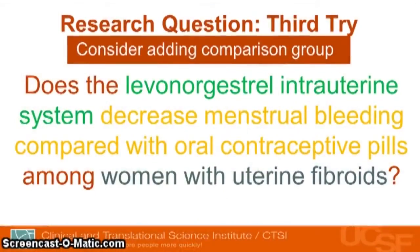However, when she discussed the design with her mentor, she realized she would likely do a randomized trial comparing the levonorgestrel intrauterine system with oral contraceptives for heavy bleeding. When comparing two interventions in a randomized trial, you may want to add the comparison group into the research question. The final version: 'Does the levonorgestrel intrauterine system decrease menstrual bleeding compared with oral contraceptive pills among women with uterine fibroids?' This is succinct, focused, and clear.